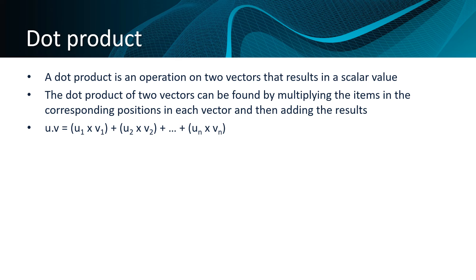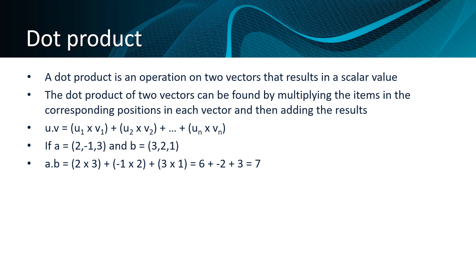To use an example, if a is a vector with elements 2, -1, and 3, then the dot product a · b equals 2 times 3, plus -1 times 2, plus 3 times 1, which comes to 7.